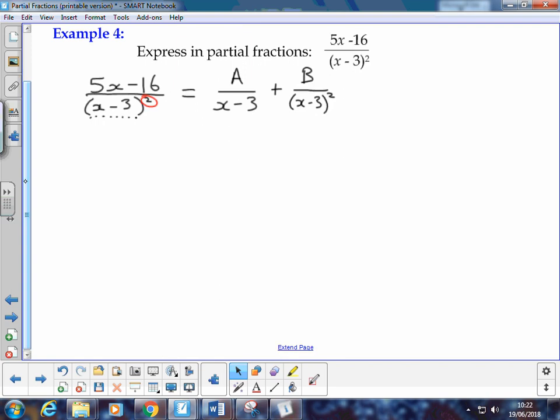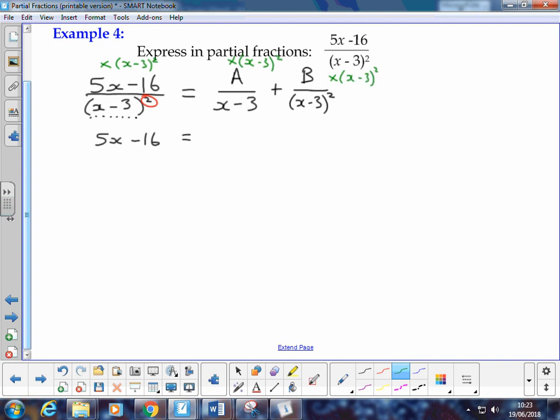The rest of the process is really exactly the same. We're going to multiply through by the denominator, which in this case is (x - 3) squared. So the denominator will cancel out here, and I'll be left with the numerator, 5x minus 16 is equal to...